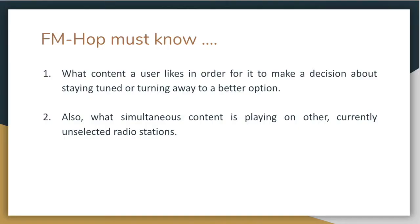How does FMHOP work? To accomplish automatic switching to content that a user likes, FMHOP must know two things at minimum: first, what content the driver likes to listen to, so that we can make decisions about staying tuned or switching to better options; and second, which option to switch to, which requires knowing what is simultaneously playing on other stations. The first is achieved by tracking driver content preferences and learning over time, while the second is more indirect.